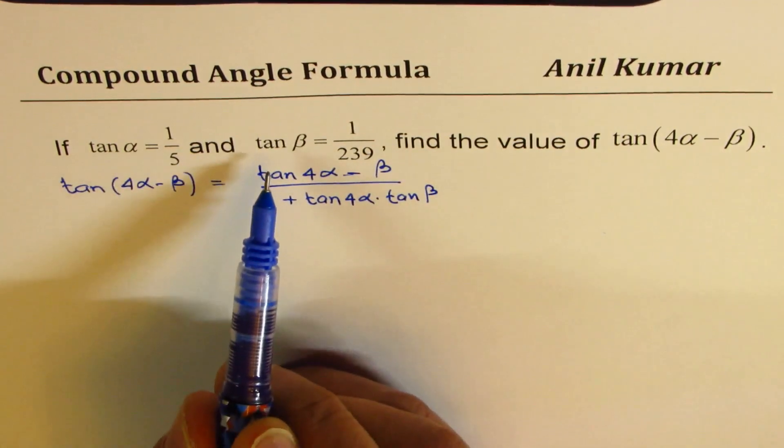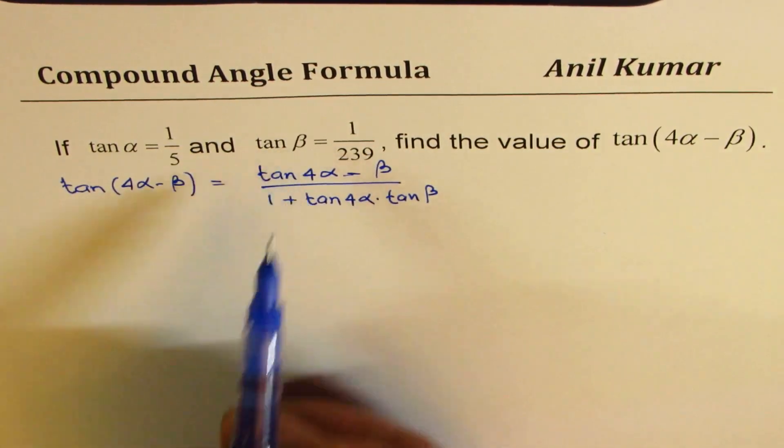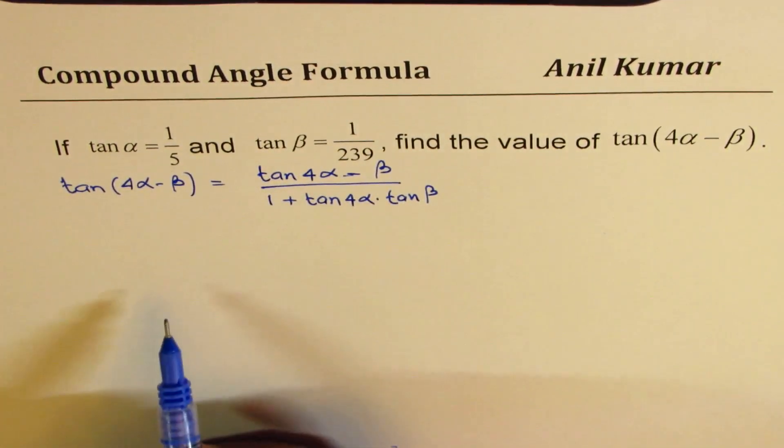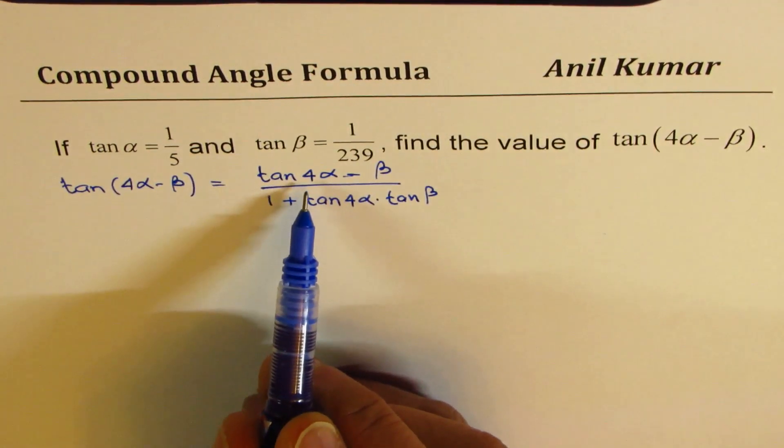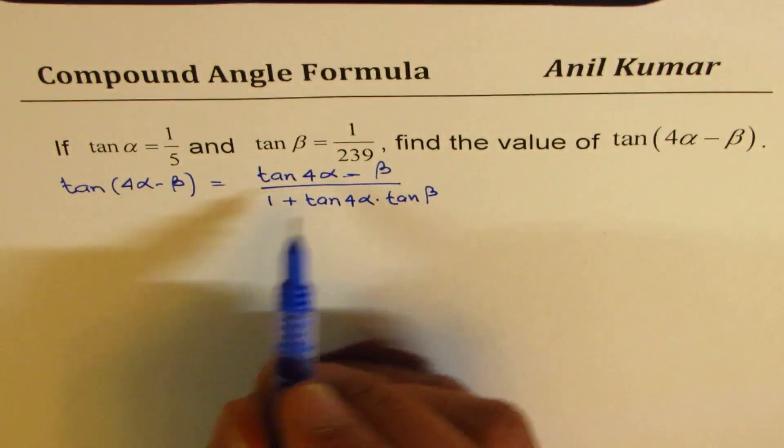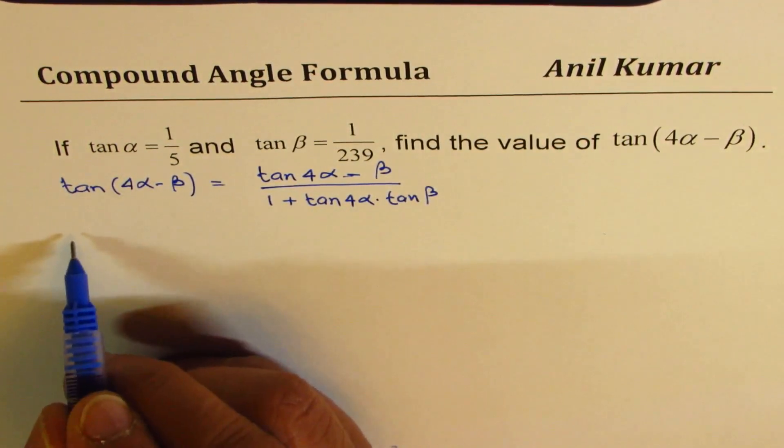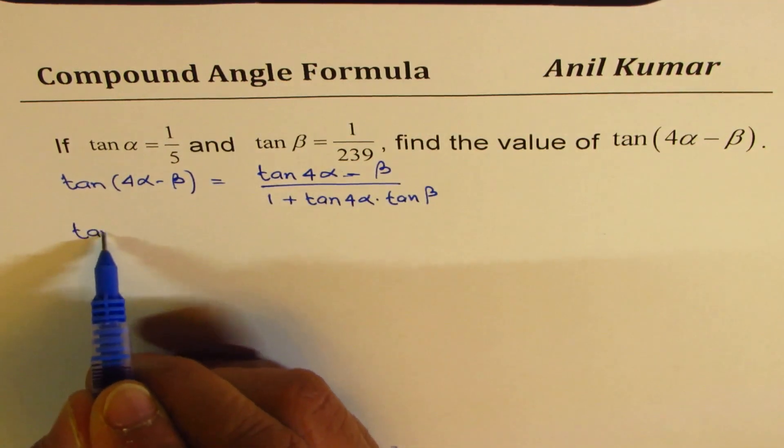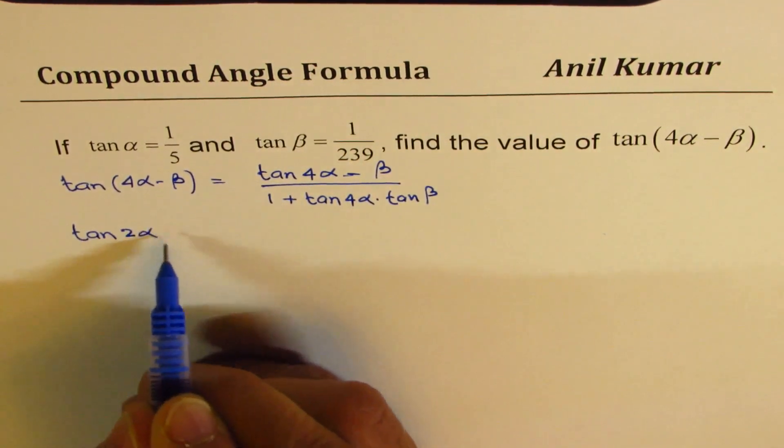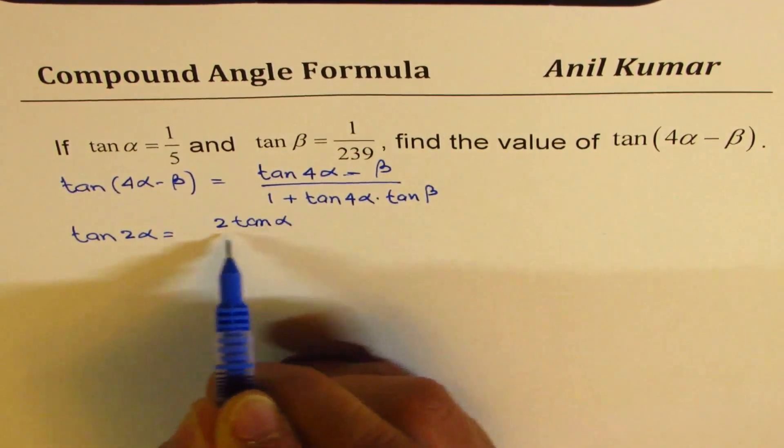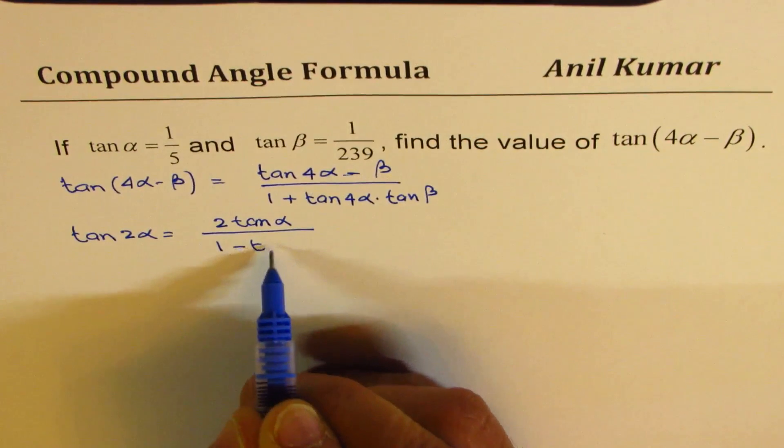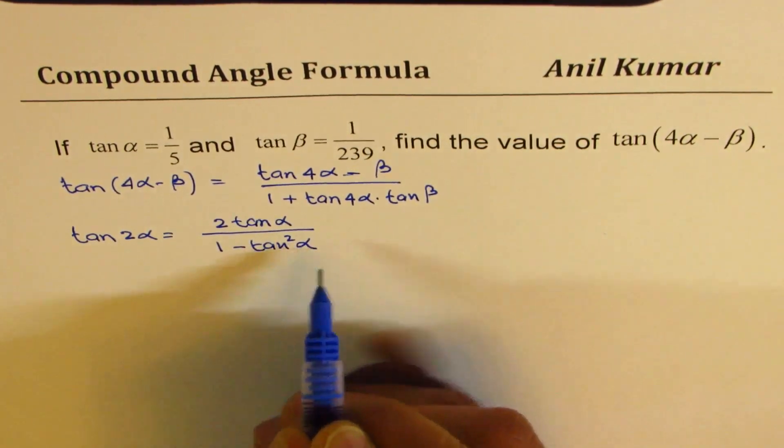Now we are given the value of tan beta, but we don't know what tan 4 alpha is. Since tan alpha is known, we can apply double angle formula and find what 4 alpha should be. So let's apply the double angle formula. First find tan 2 alpha. That should be 2 tan alpha divided by 1 minus tan square alpha.